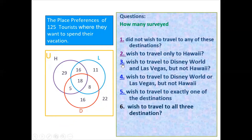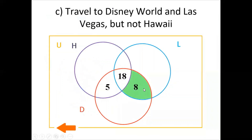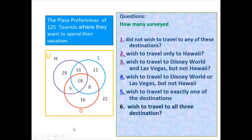Question 3: How many surveyed wish to travel to Disney World and Las Vegas but not Hawaii? Disney World and Las Vegas but not Hawaii — that is the intersection of those two sets only, which is 8.